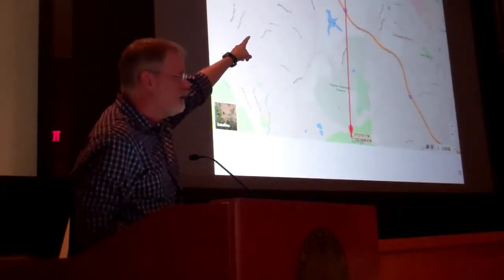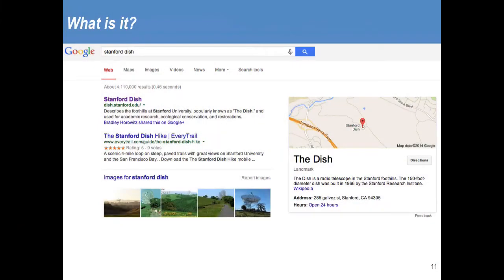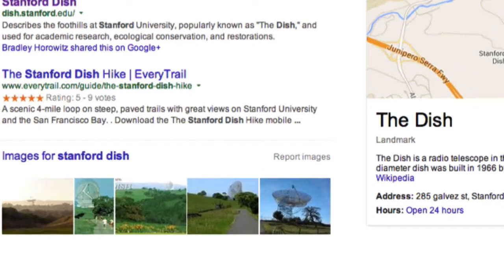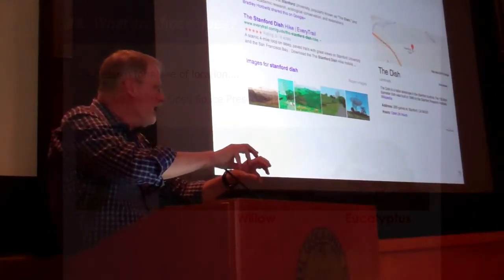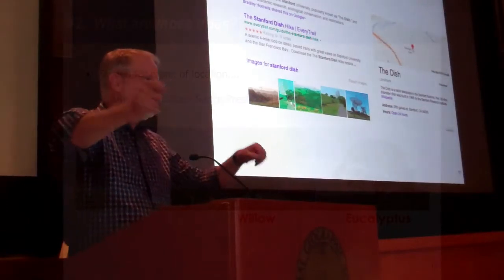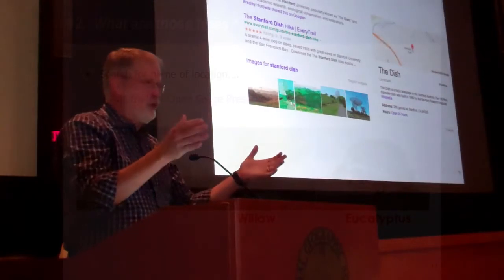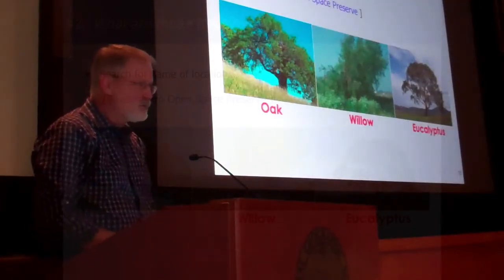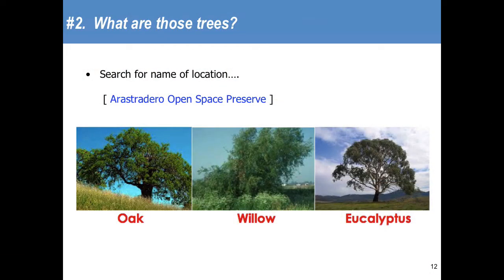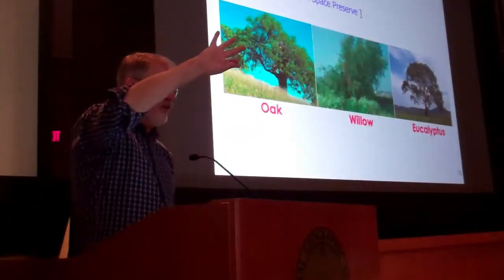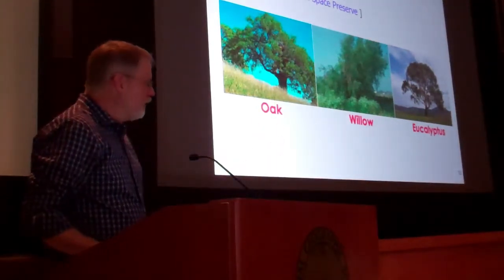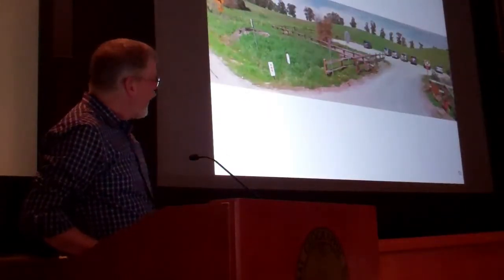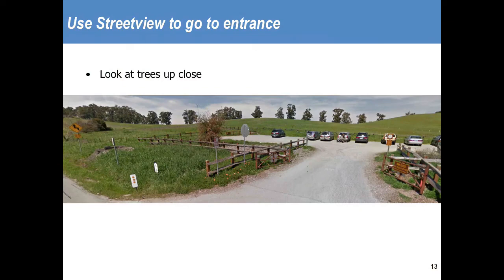I zoom out a little bit and look for things that might appear white. The first things I hit are the Rastradero Preserve, the freeway, the lake — those aren't going to be white. But then there's the Stanford dish. It's labeled in the map. You do the search for Stanford dish and look at that photograph. So now we've figured out what the white thing is. Now what about those trees? If you go to the Rastradero Preserve — because the trees are midway between the white thing and the photograph — there are only three kinds of trees mentioned in the botanical guide: willows, oaks, and eucalyptus trees. I go to the street view and zoom in: they're clearly eucalyptus trees.